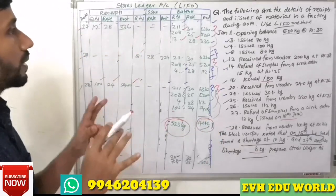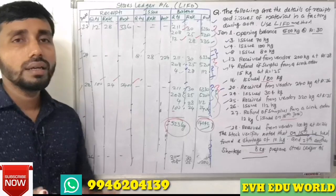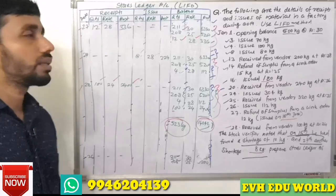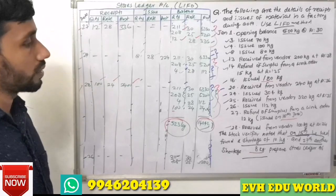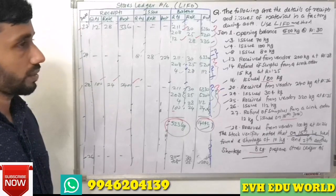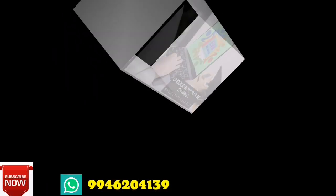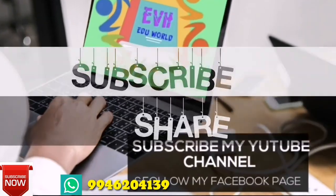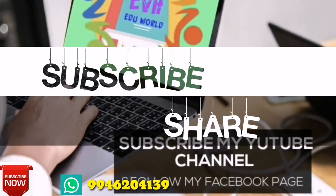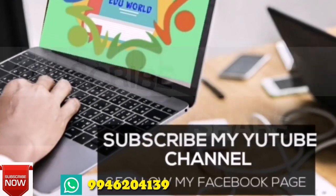We now prepare the final stores ledger account with the closing balance reflecting all receipts, issues, returns, and shortages recorded using the LIFO method throughout the month.